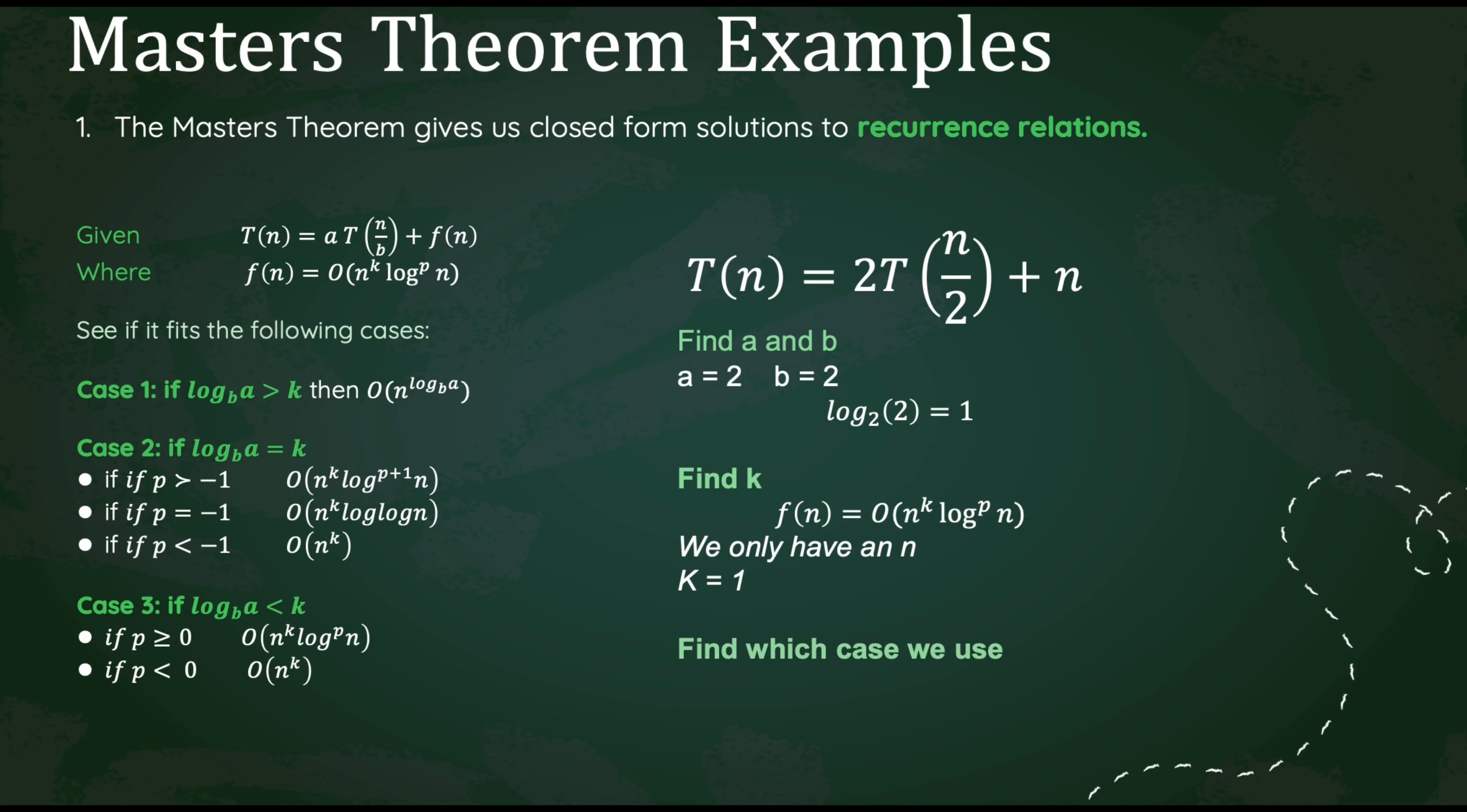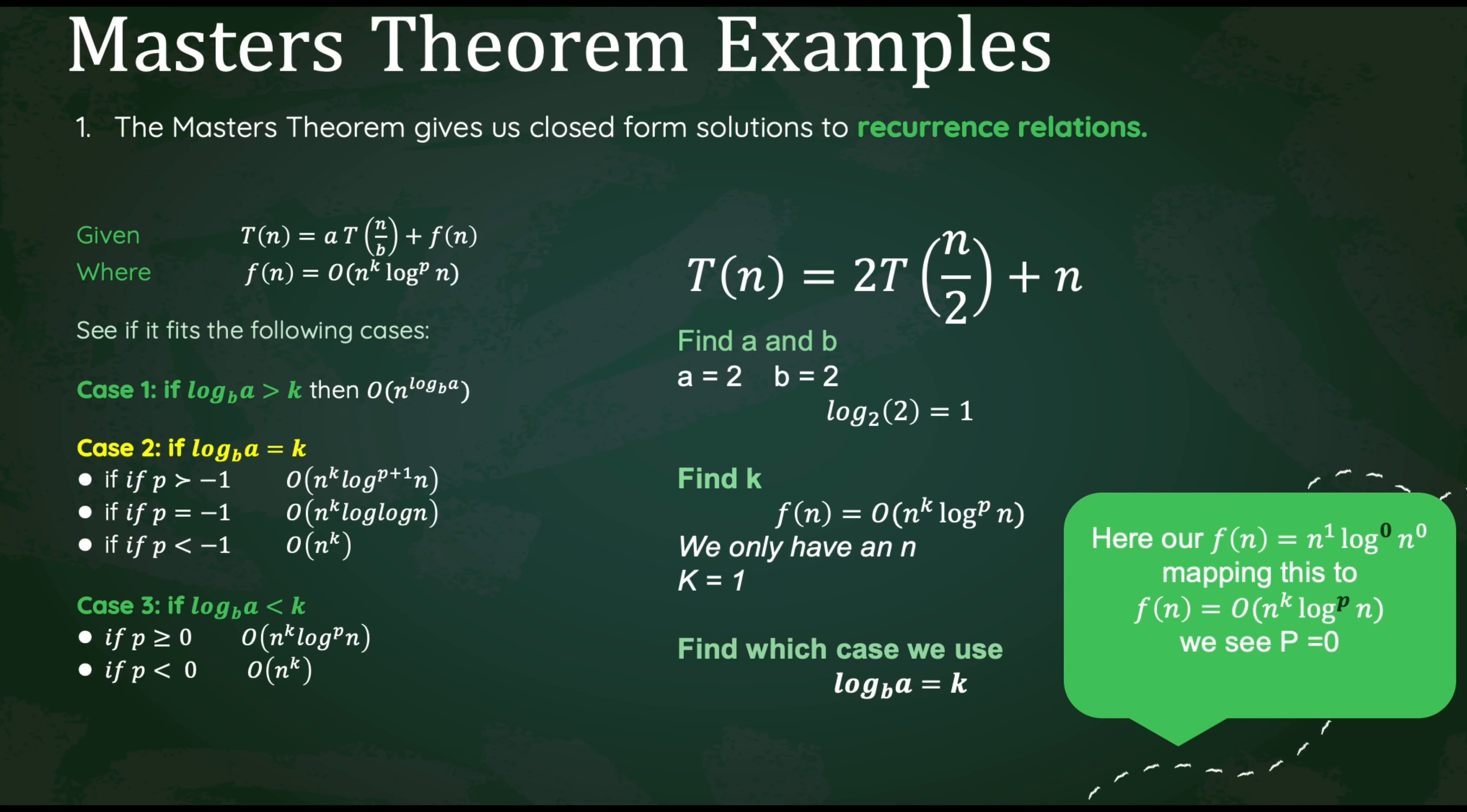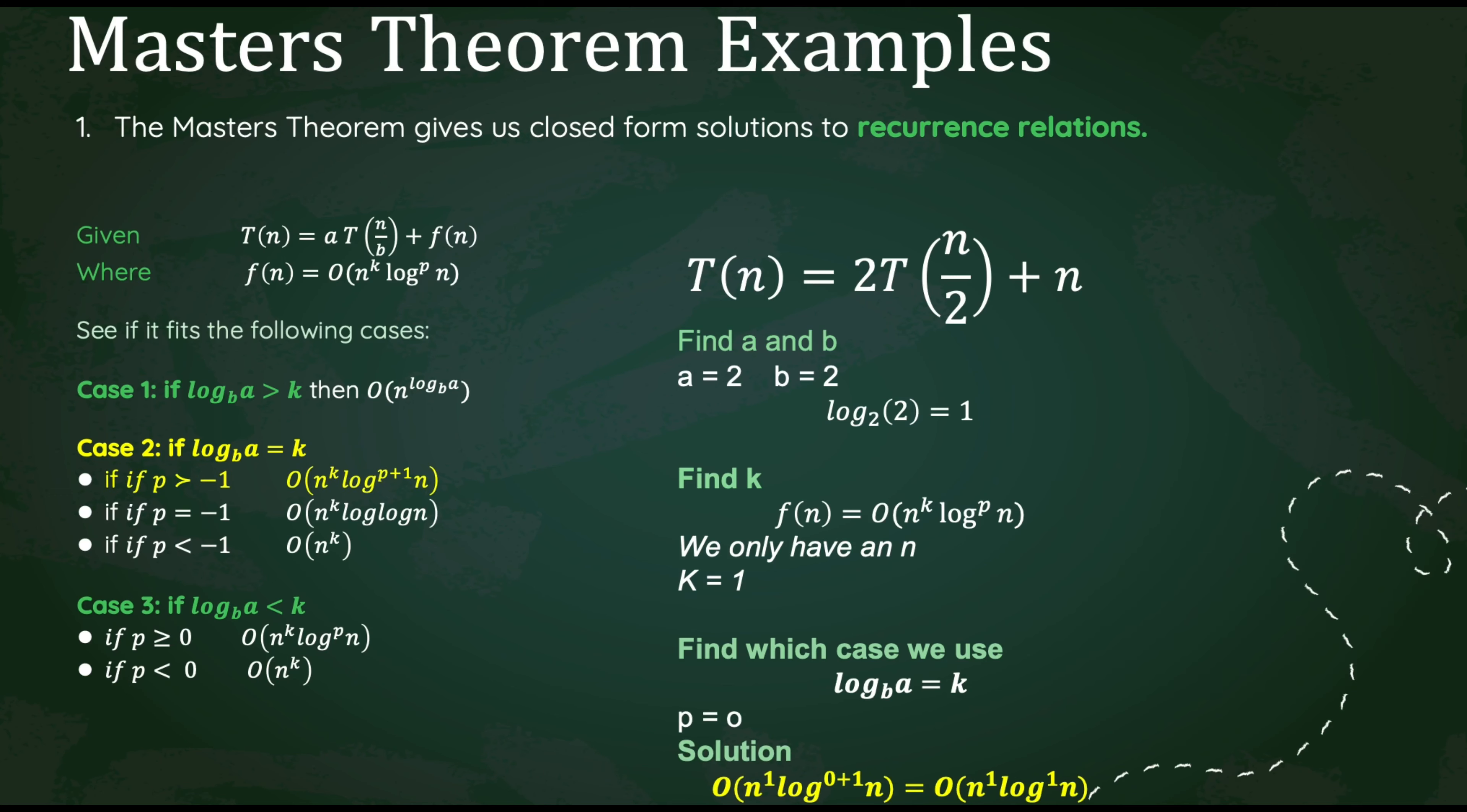Now we need to find which case we fall into. Comparing log base b of a and 1, we see that log base b of a is equal to k. That means we fall in case 2. But now we have a subcase we need to find. So let's find p. Here we see our f(n) is equal to n to the first power, log to the 0 power, n to the 0 power. That means that our p is going to be 0 here. Since our p is 0, that means we have our first subcase. p is going to be greater than negative 1. Plugging it into the format that we're given for that particular subcase, we see our answer is theta of n log n.